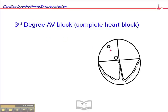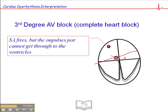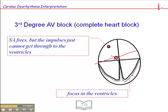In a third-degree AV block, what's happening is the SA node is firing, but it can't get through the AV node or the bundle of His. There's a complete block happening. Consequently, the SA node fires but just can't get through to the ventricles, and the ventricles are waiting for an impulse to reach them. It doesn't happen. So an ectopic focus begins to fire and take over pacing from somewhere in the ventricles — I've drawn it here in the left ventricle, but it could be the right ventricle or anywhere. This focus is an escape focus — a compensatory focus — and it takes over pacing.